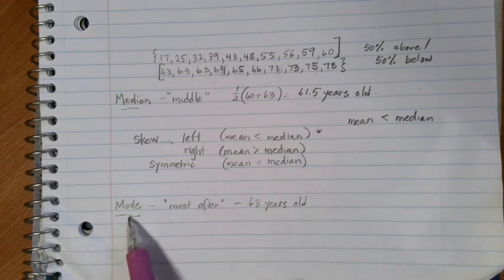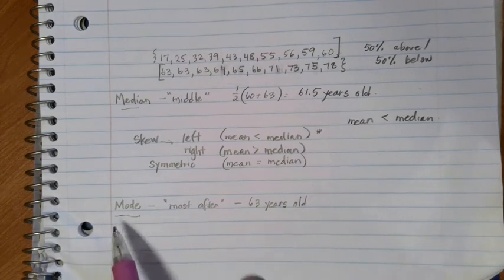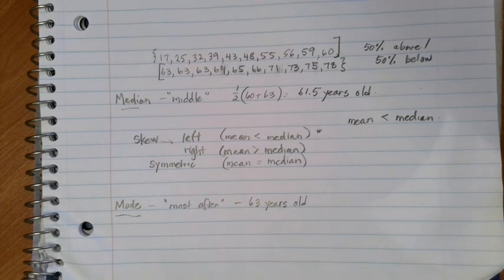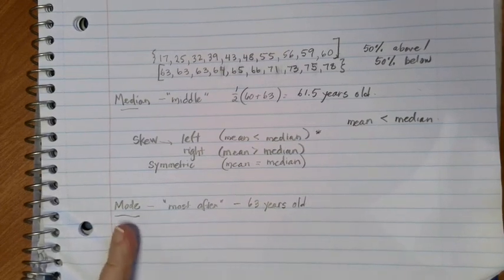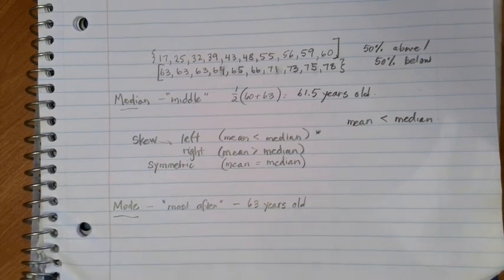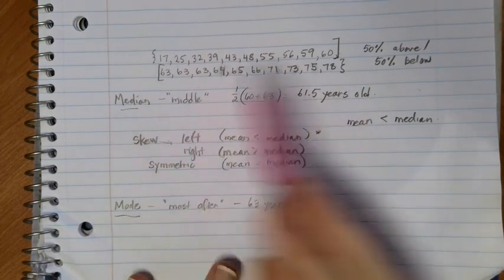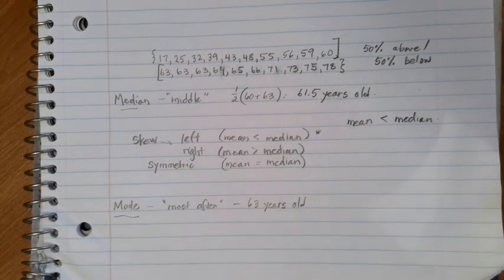And this is most often used when we're calculating survey answers that aren't numerical in nature, but still interesting or useful. The thing about the mode that's kind of interesting is you can have more than one mode. For example, if 78 showed up three times, then 63 and 78 would both be modes.